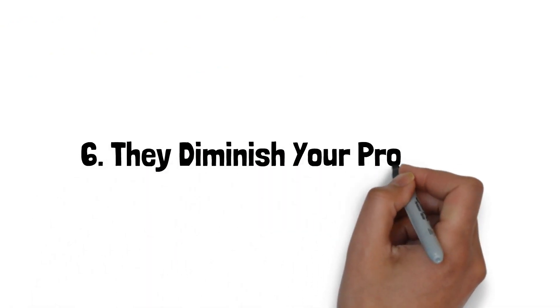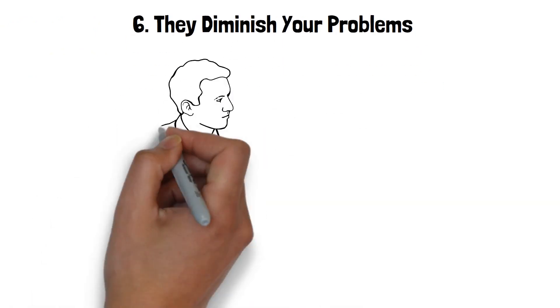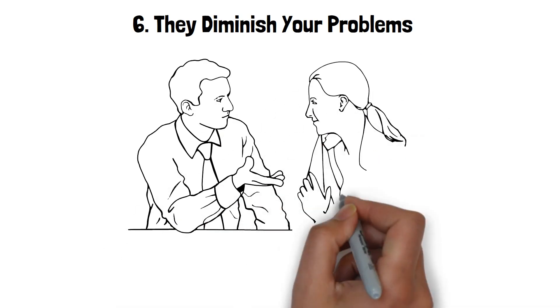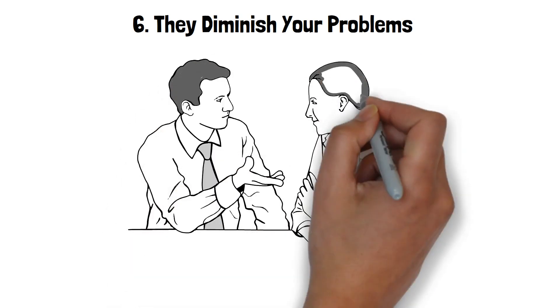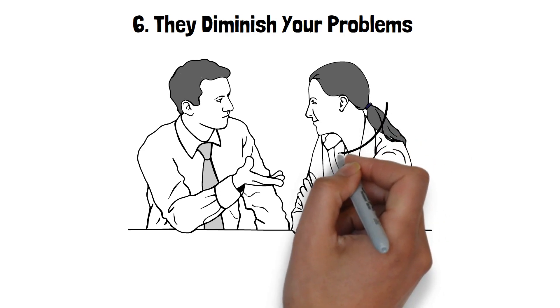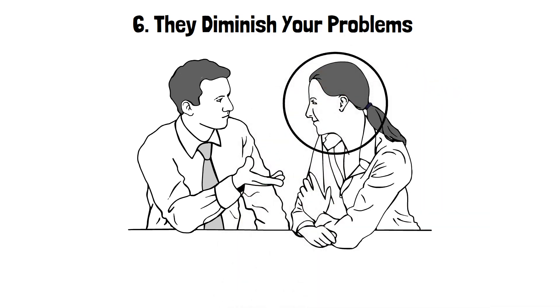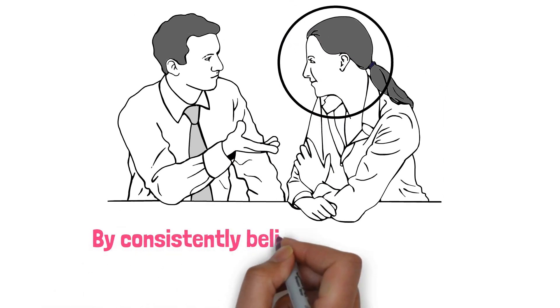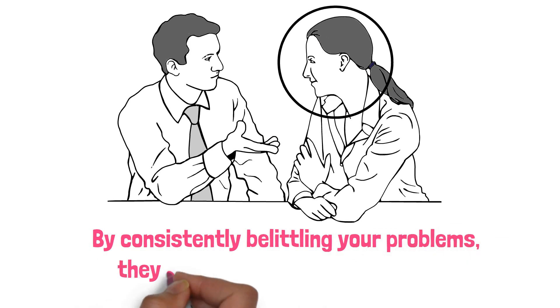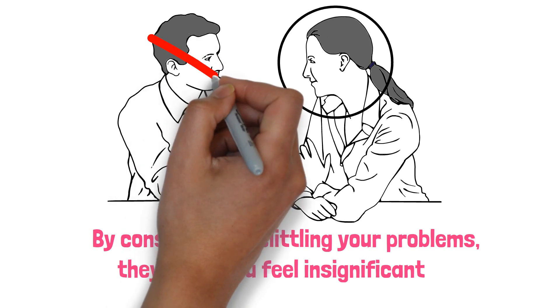6. They diminish your problems. You had a tough day and want to talk, but instead of support, you get, that's nothing, my day was way worse. Suddenly, it's all about them. By consistently belittling your problems, they make you feel insignificant. The underlying message is that your feelings don't matter to them.